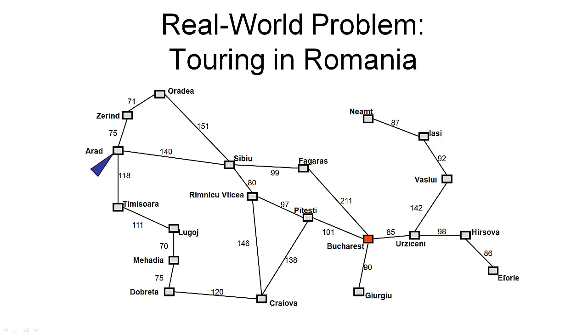In contrast to this toy problem, we will now look at a real-world problem, namely touring in Romania. What you see here is a rough map of the country with some of its major cities. To define touring Romania as a search problem, we again have to define the four components of a search problem. So let's start with the initial state. Suppose we are in the city of Arad. That's where we start our tour of Romania.